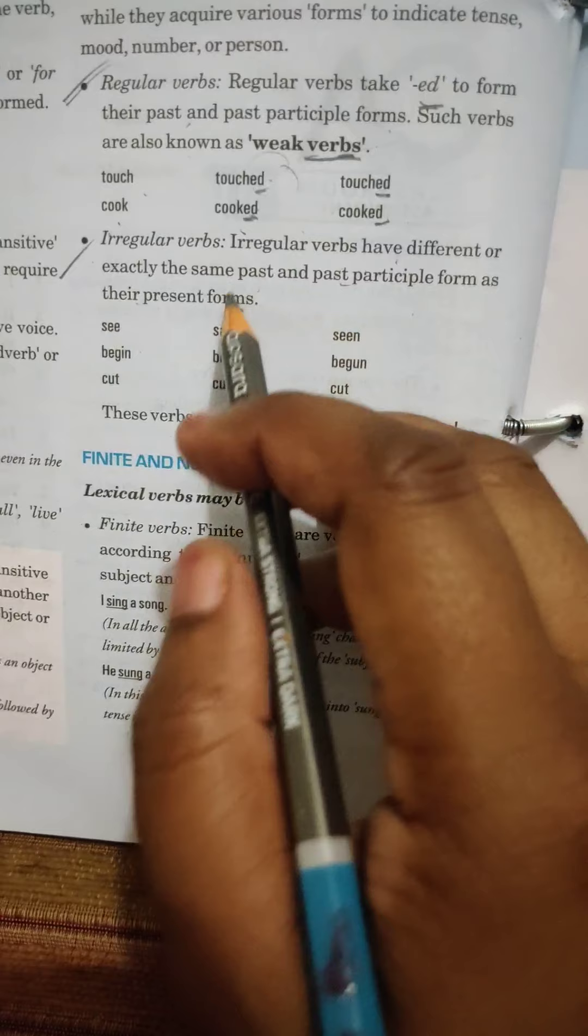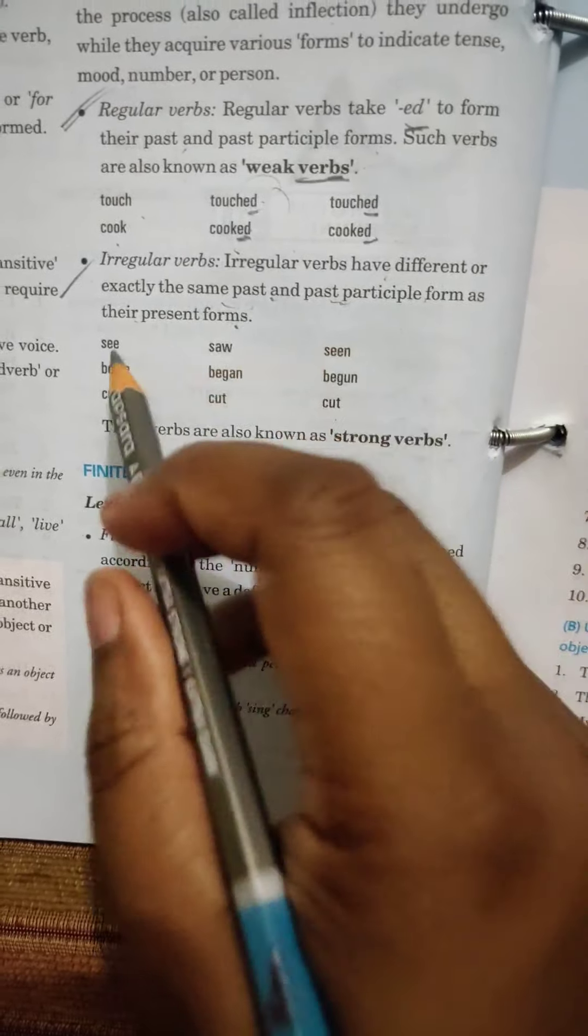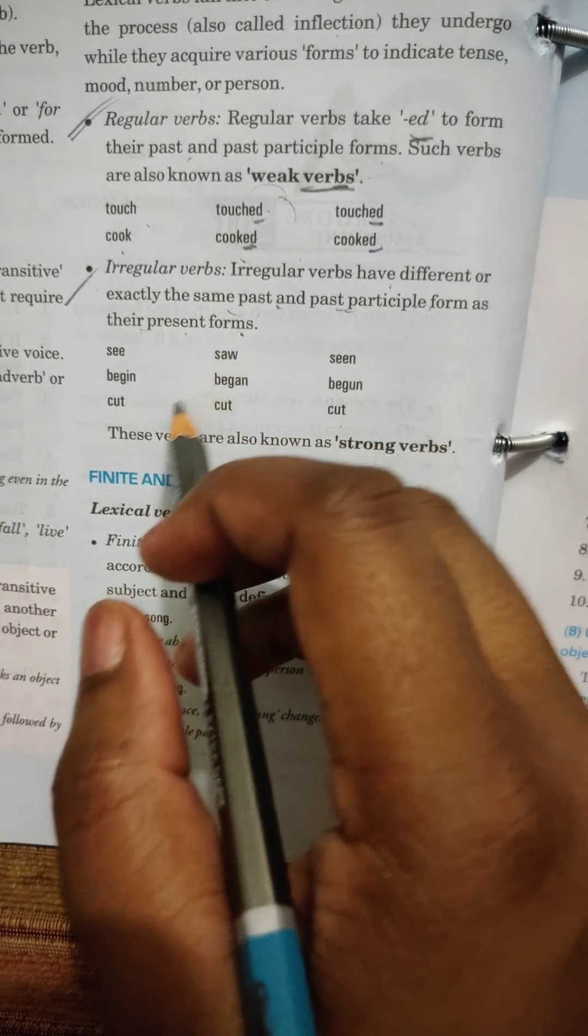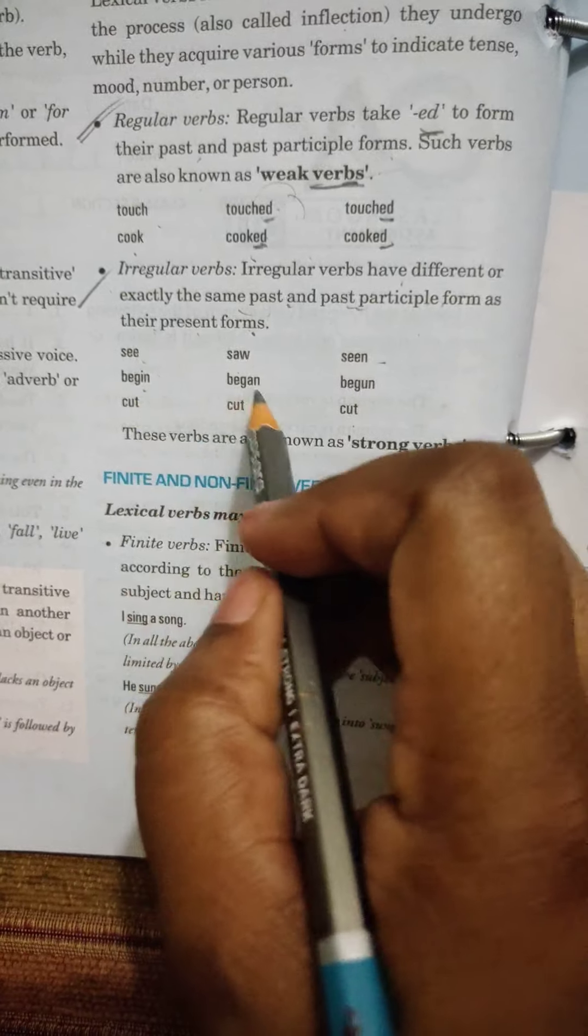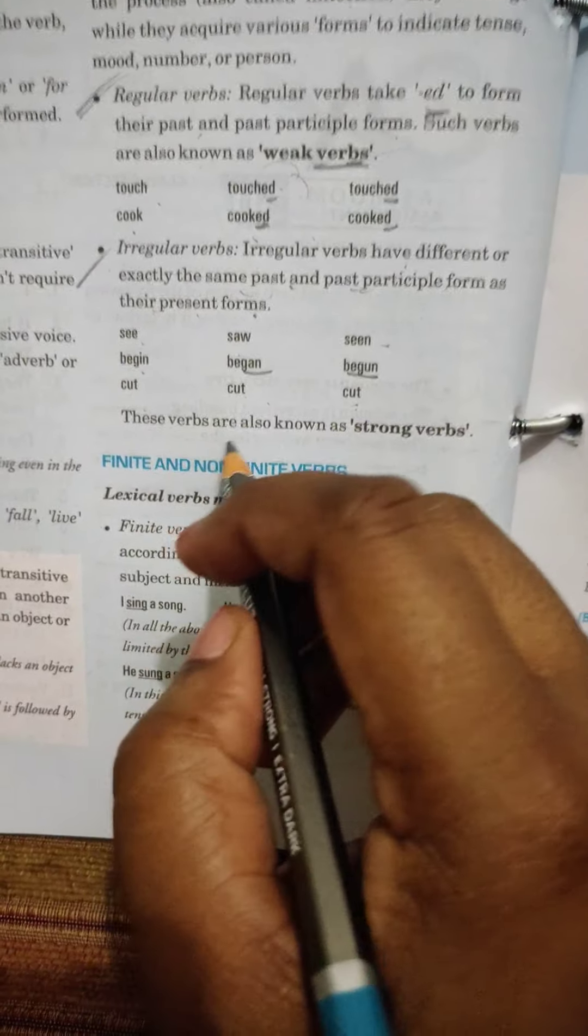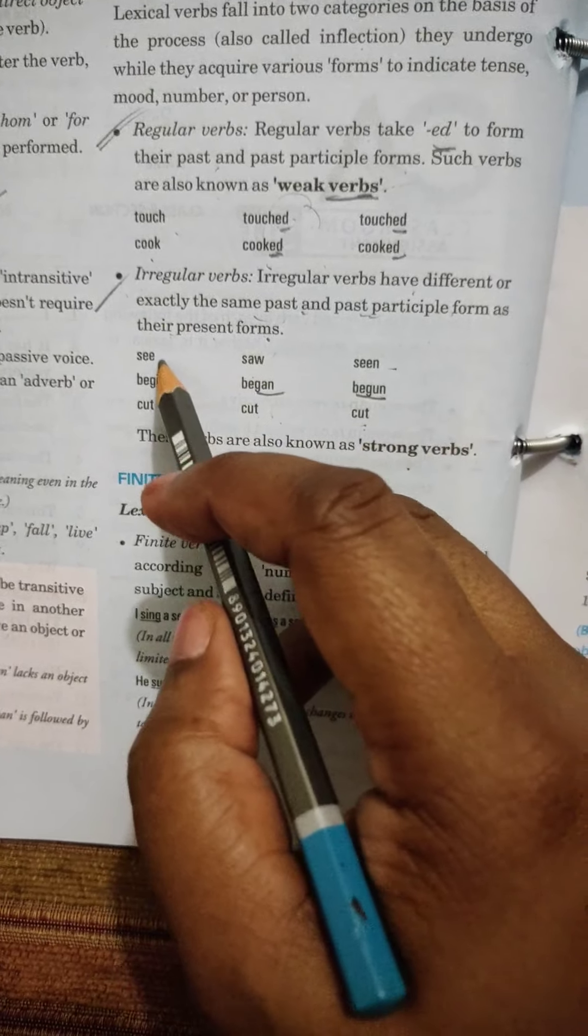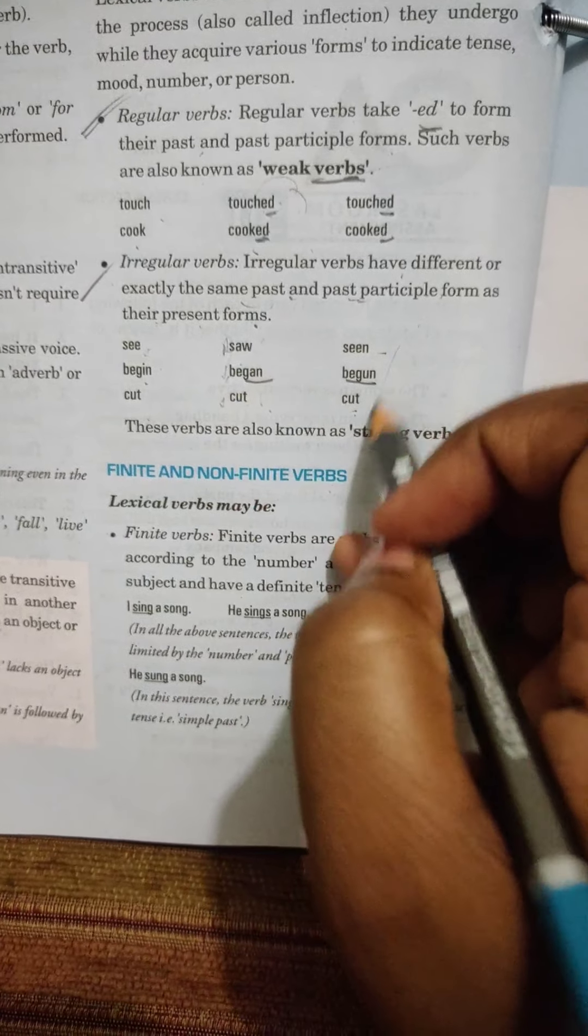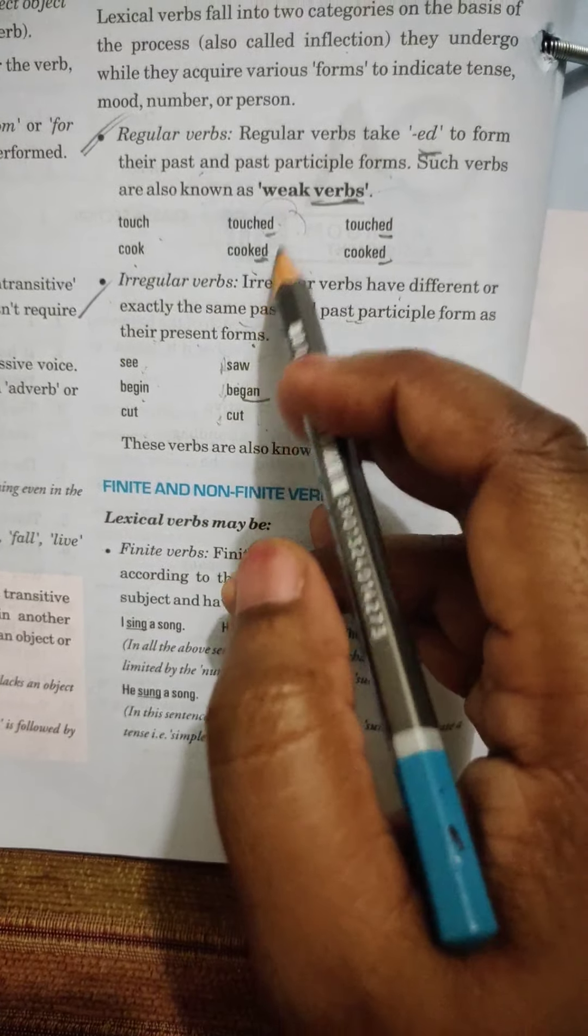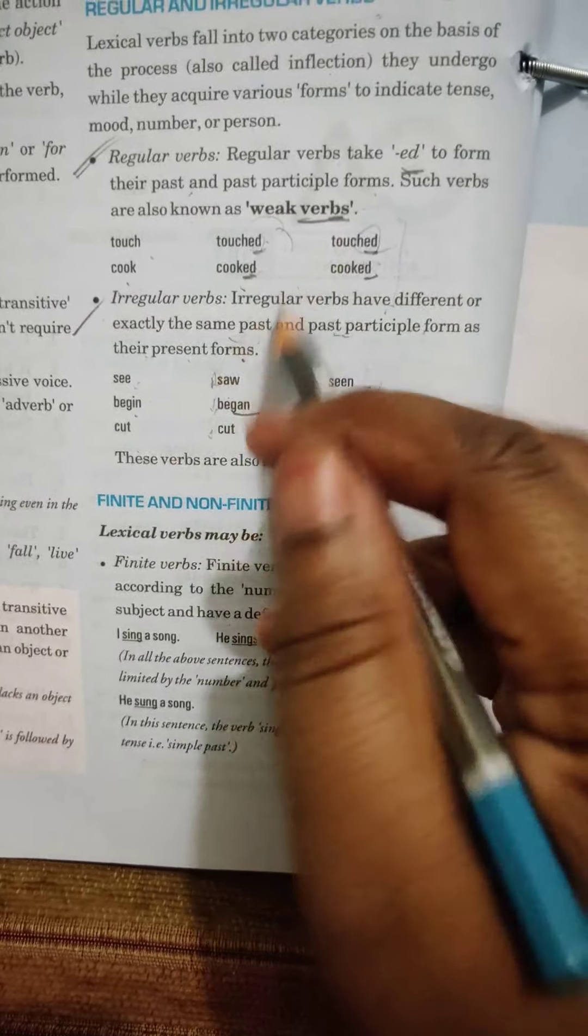Irregular verbs are verbs that have different or exactly the same past and past participle forms as their present forms. Now, this may confuse you, but if you a little pay attention, it will be very clear to you. They say exactly the same past and past participle form as their present forms. Like see, saw, seen, began, begin, began, begun, cut, cut, cut. So, these verbs are known as strong verbs. These are of course strong. See, they are all having the different powers. So, these are strong. They are having the same power. See, this is also touched, ed, ed, ed, same power. So, these are weak verbs.